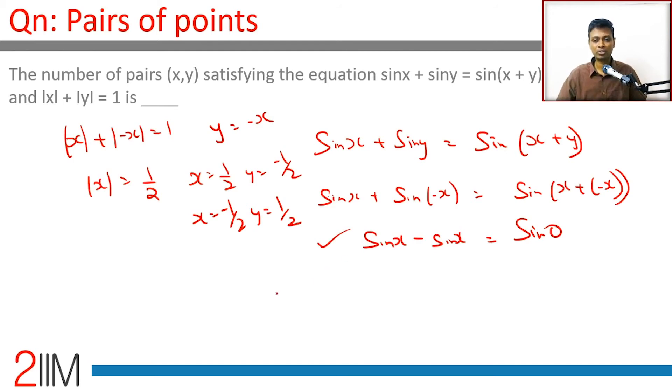The other value we can think of: stick one of them as 0. Let's put y = 0. Then sin x + sin 0, which is 0, equals sin x. So y = 0 works. That means |x| = 1, so x could be 1 or -1.